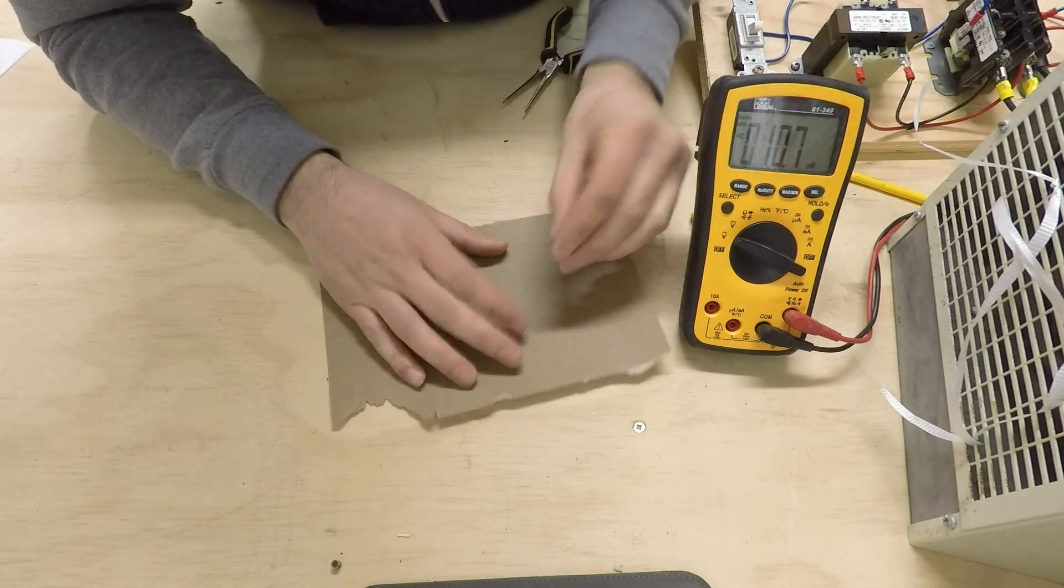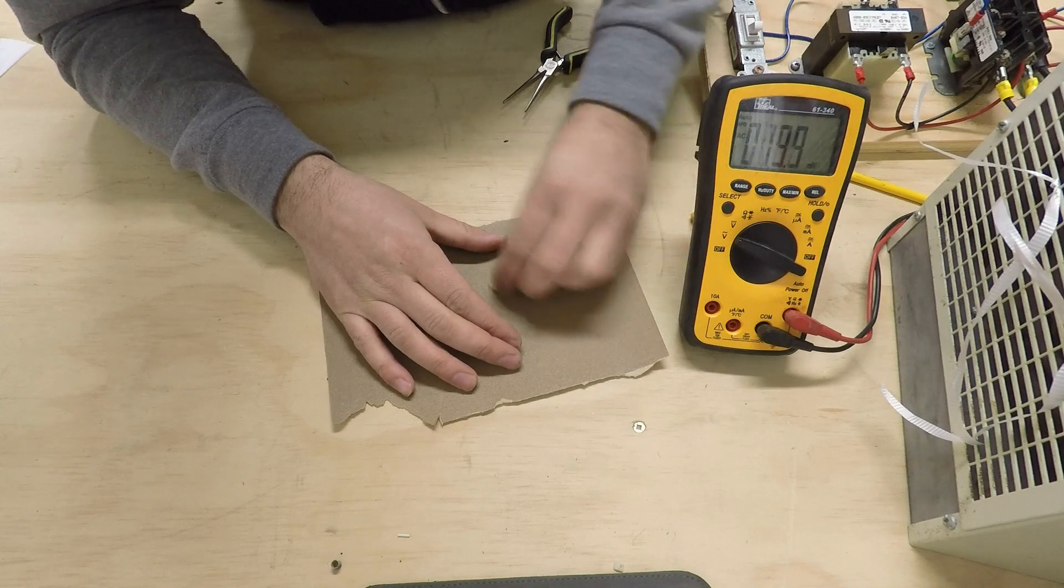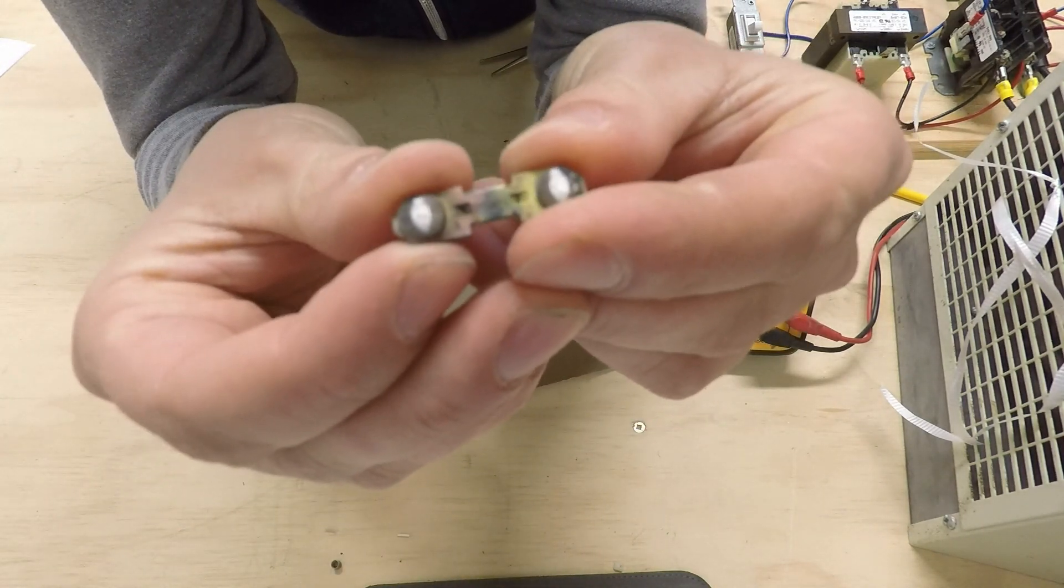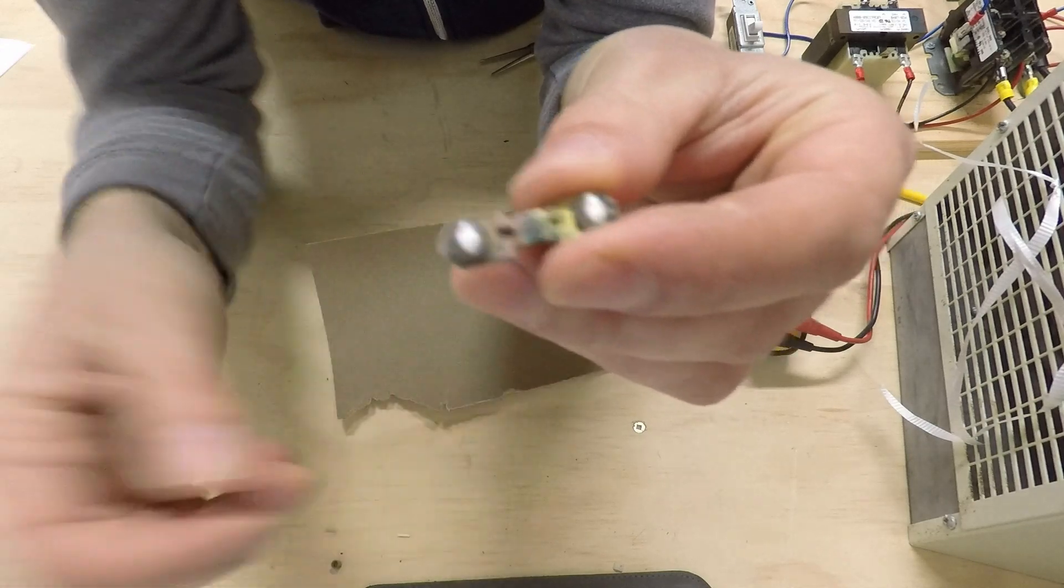So you take some sandpaper and just rub that contact on there around a little bit to take off that layer, take off the layer of carbon. And then when you look at it again, you can see the bright metal surfaces now. So that contact surface is good to go.